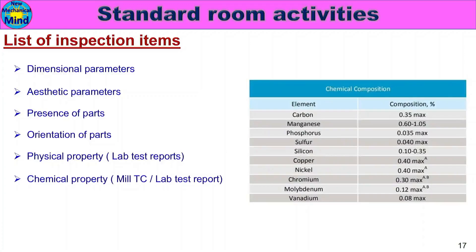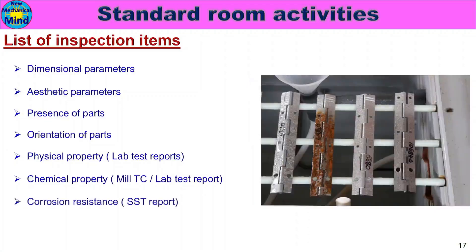Chemical properties can be verified using a testing instrument or supplier mill test certificate. Corrosion resistance is checked via a salt spray test for metal parts and plating quality — either using a salt spray testing machine or by verifying the supplier report.